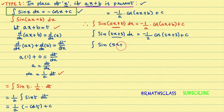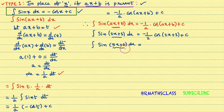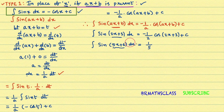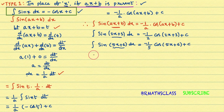One more example: integral of sin(5x+6) dx. This is very important and frequently used. We know integral of sin(x) dx; in place of x, 5x+6 is there. We start with 1 divided by x-coefficient; x-coefficient is 5. The form is integral of sin(x) dx, which is minus cos(x)+c, so we write minus cos(5x+6) divided by 5, plus c.